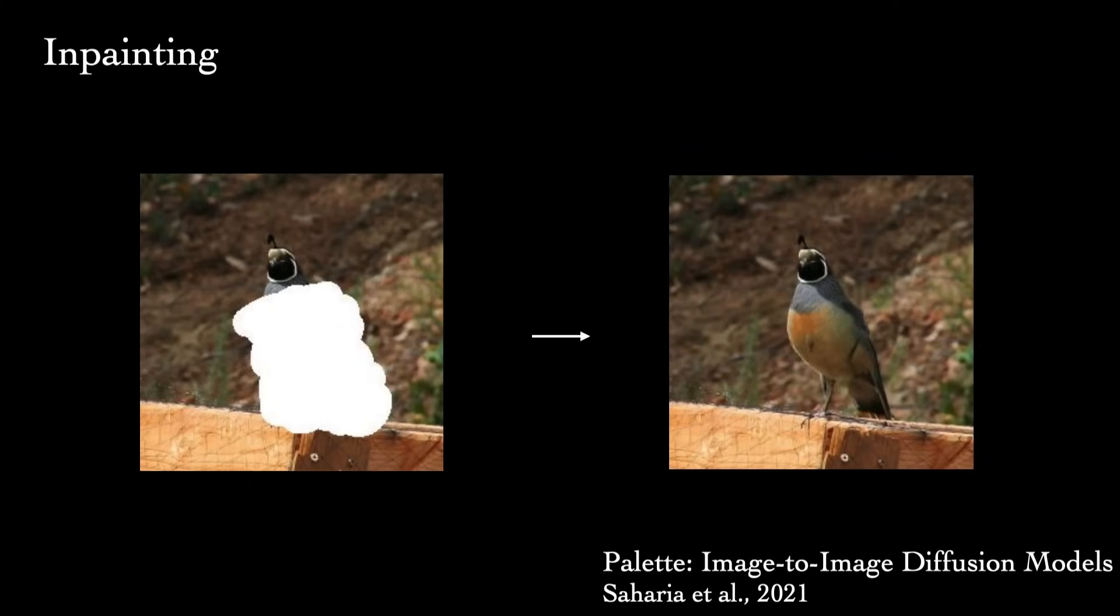Instead, better results come from fine-tuning a model specifically for this task. We can randomly remove sections of training images and have the model attempt to fill them in, conditioned on the full, clear context.